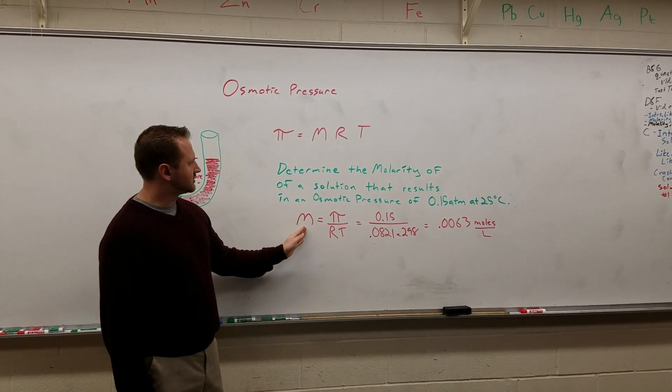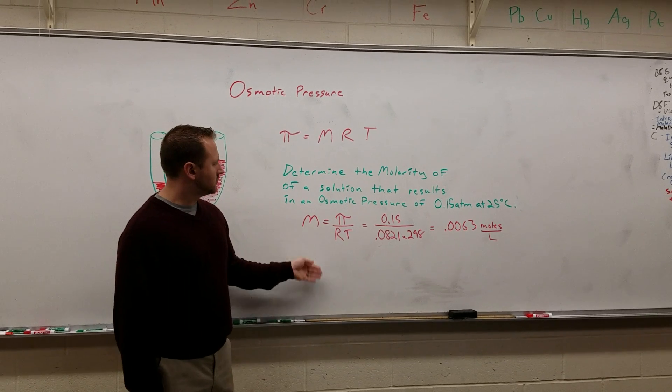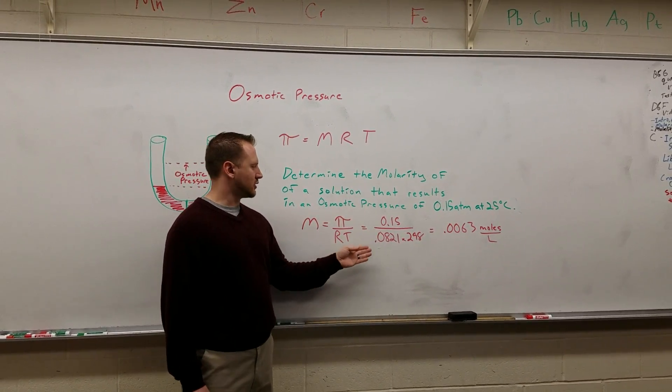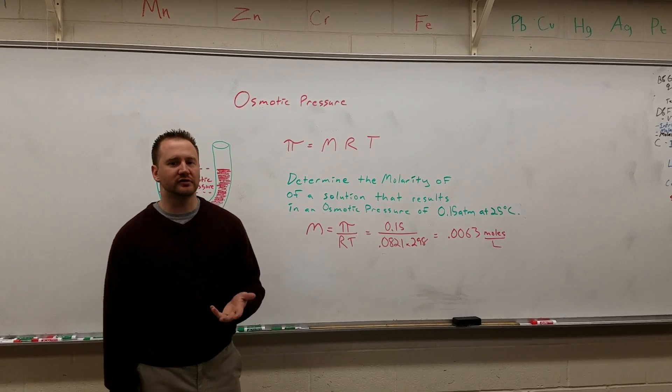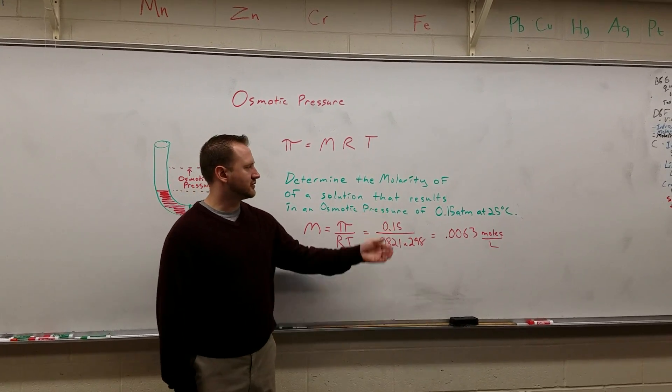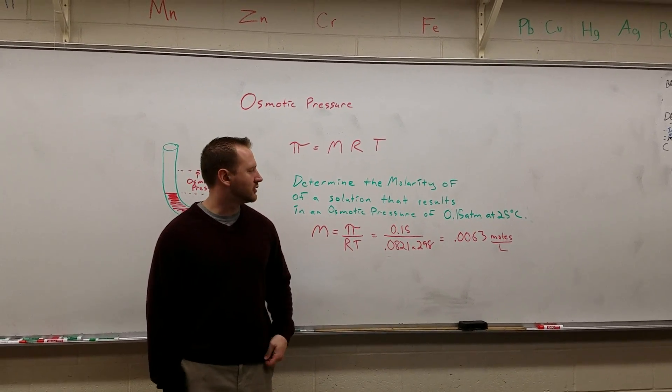When we rearrange it to solve for the molarity to attack this problem, we simply plug in the osmotic pressure and divide by R and T, and then you could determine that the concentration of this solution that resulted in a pressure of 0.15 atmospheres is 0.0063 moles per liter.